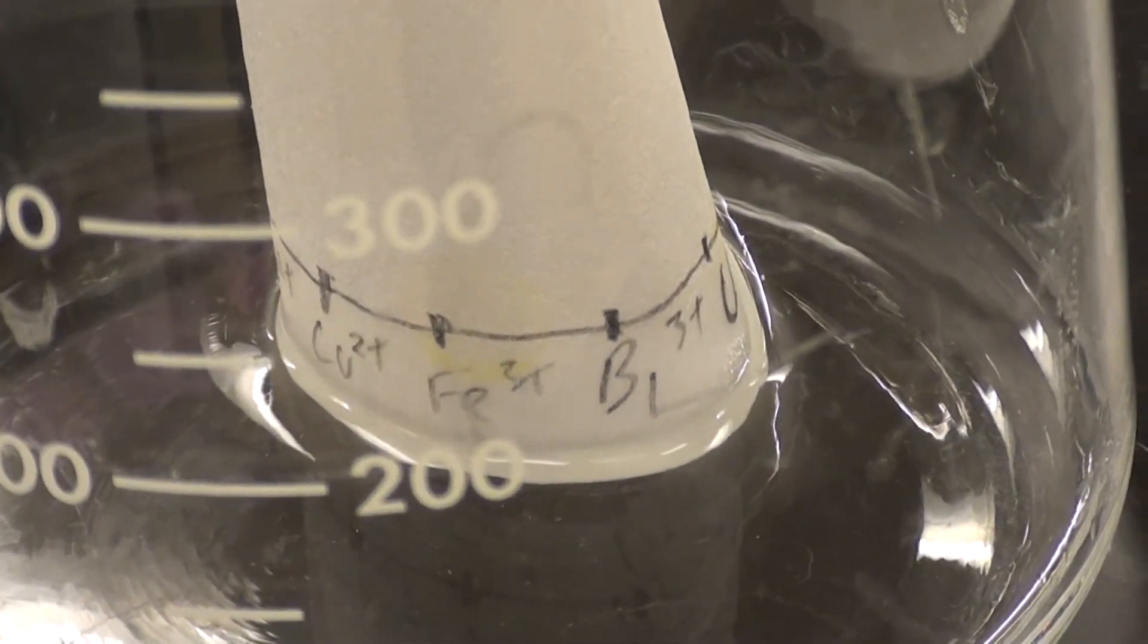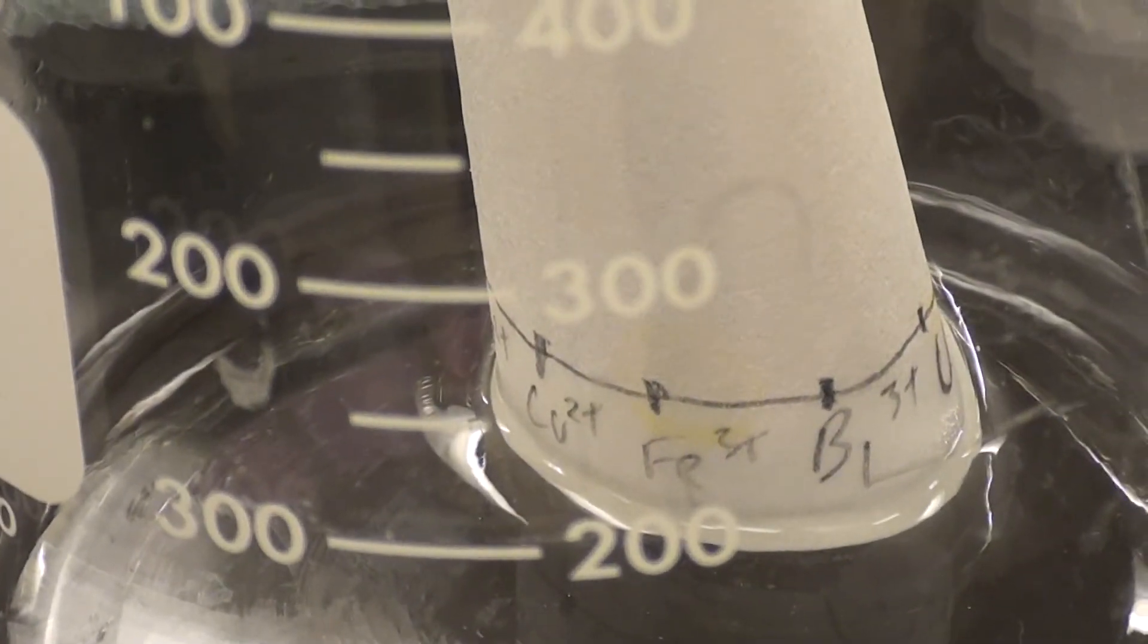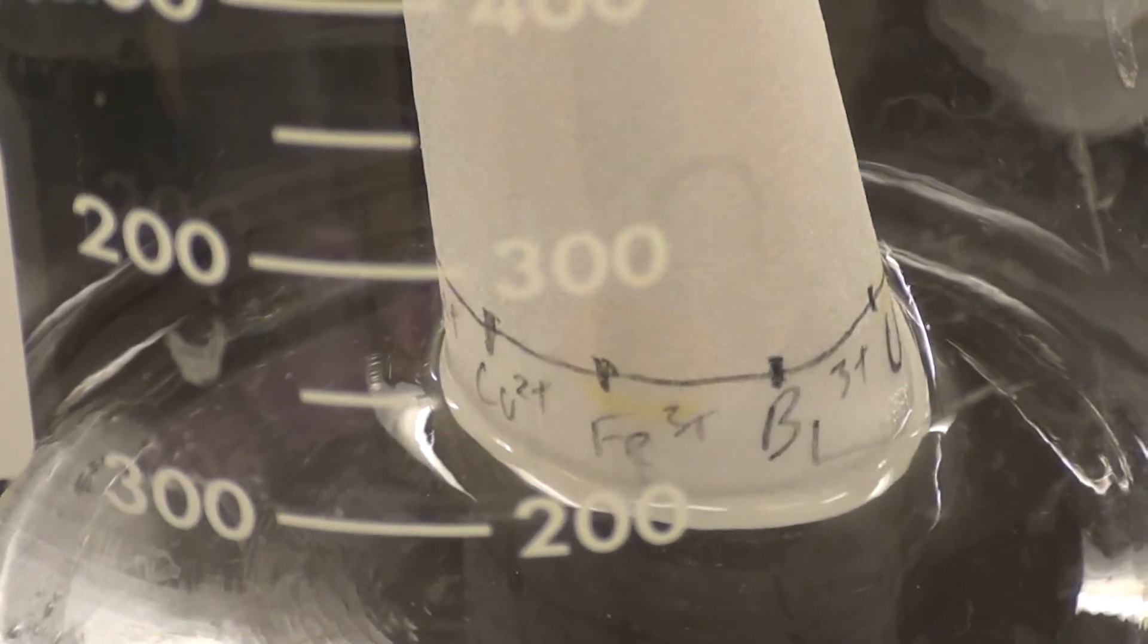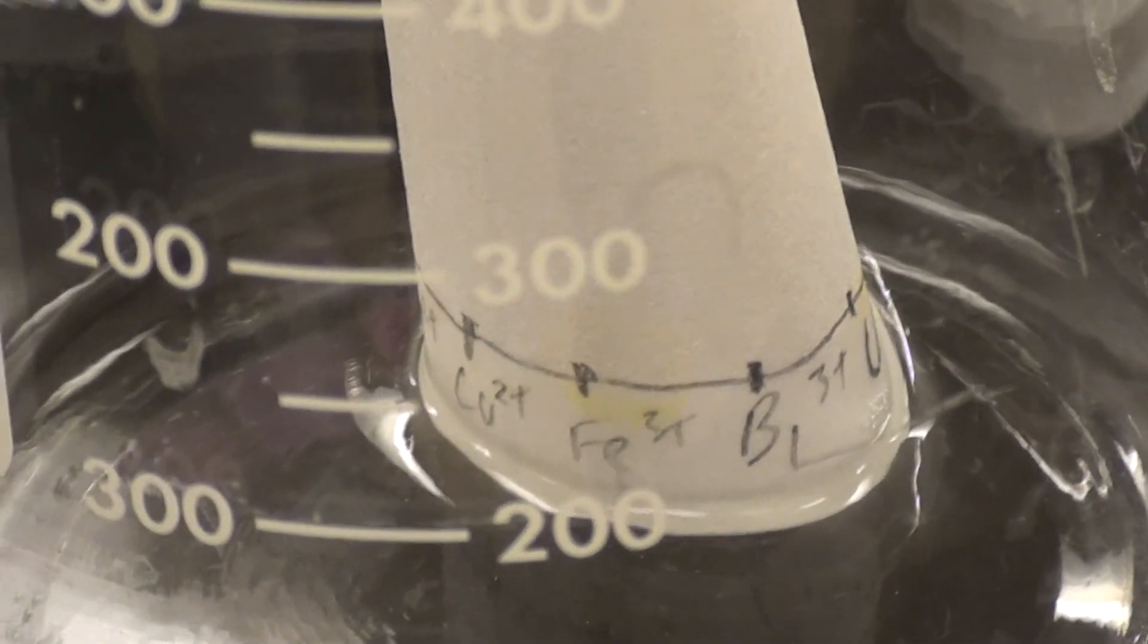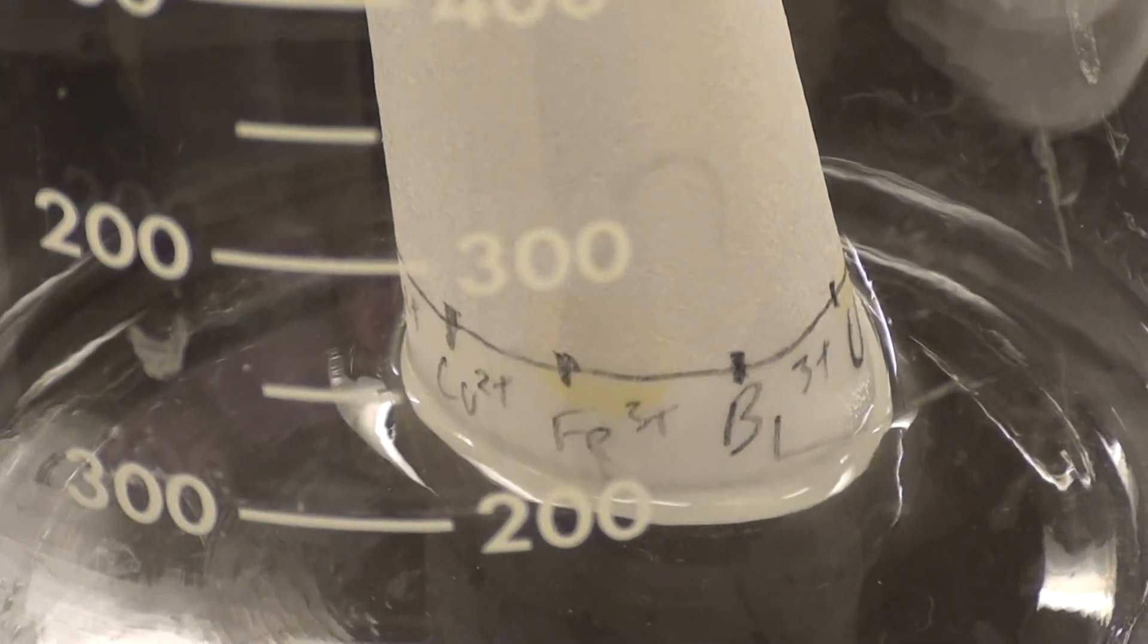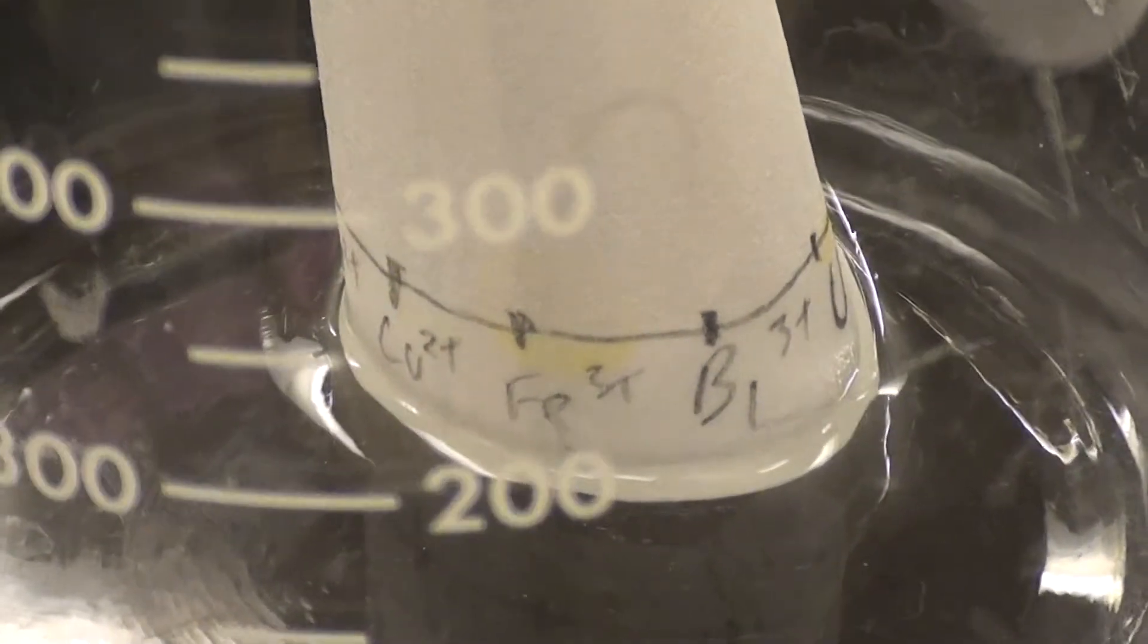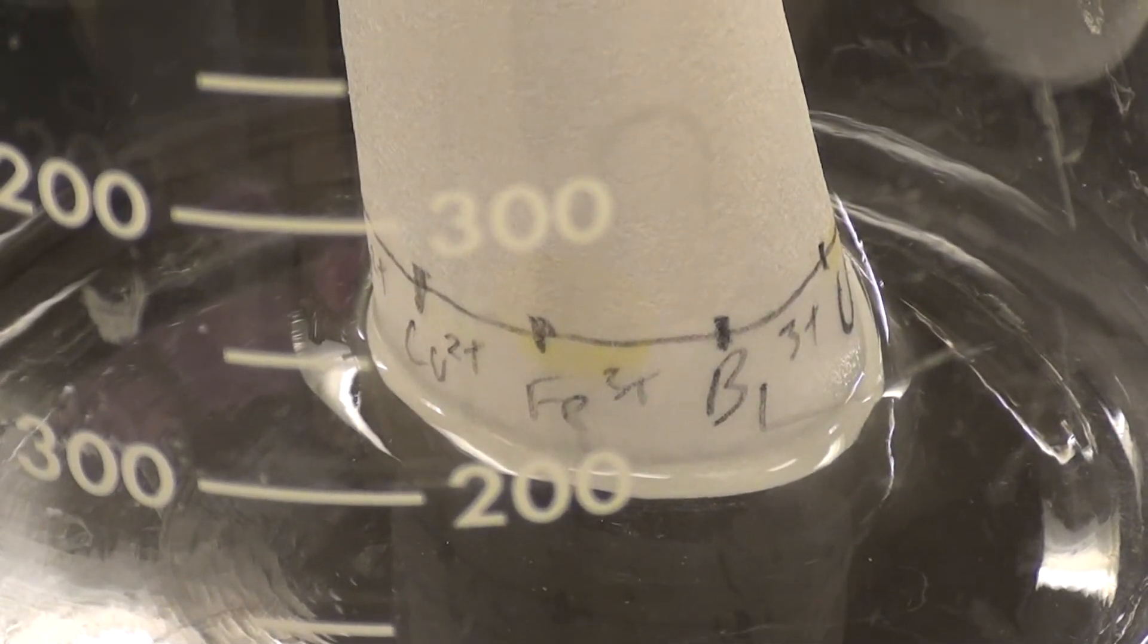Now what's going to happen is ideally we want to leave this in here long enough so that it reaches that top line, the line at the top of the paper. So I'm not sure that we'll be able to leave it in there that long, but we want to leave it in for as long as we can to let this go as high as it possibly can and we get the best separation of our ions and the best RF for our spots that we will calculate later on. Alright, I'm going to leave it there for now and we'll come back to this once it's come up the plate a bit further.